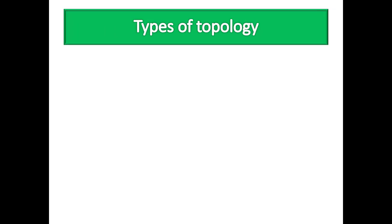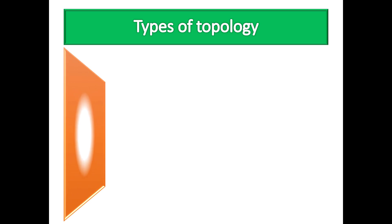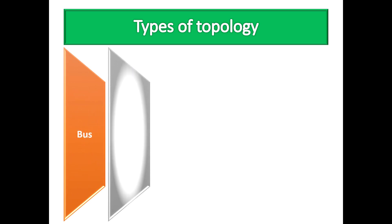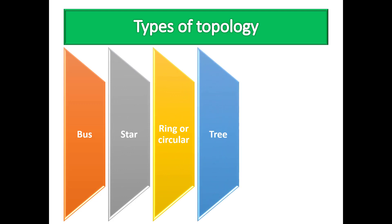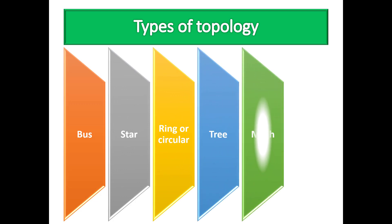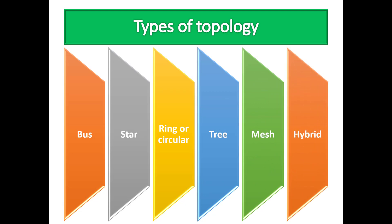Now let's move to the types of physical topology. There are topologies such as bus topology, star topology, ring or circular topology, tree topology, mesh topology, and hybrid topology. Today I'll discuss bus topology.